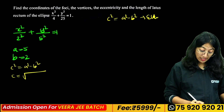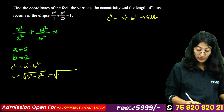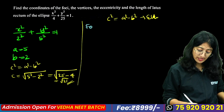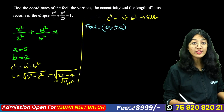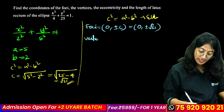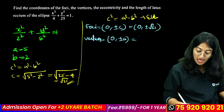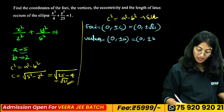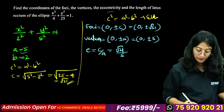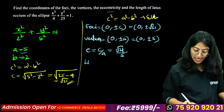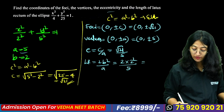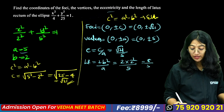So c = root of (a² – b²) = root of (25 – 4) = root 21. The foci are at (0, ±√21). The vertices are at (0, ±a) = (0, ±5). The eccentricity is e = c/a = √21/5. The length of the latus rectum is 2b²/a = 2×4/5 = 8/5 units.